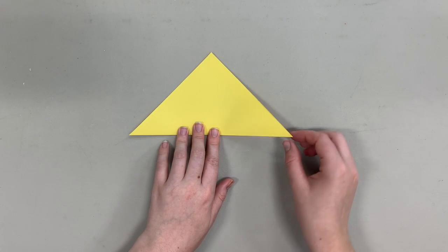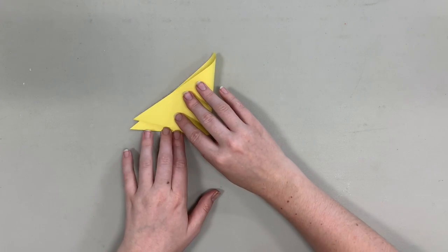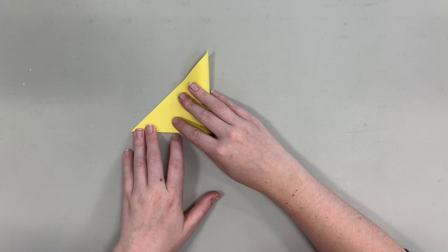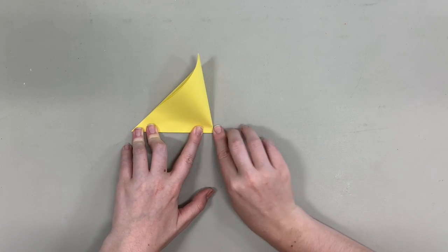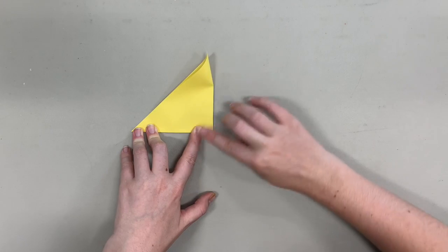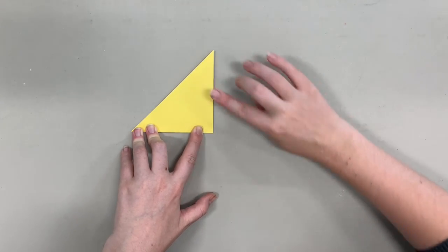Next, take this corner and fold it over to the other corner. Line those up and smooth it out so there are no wrinkles, then press down really hard.